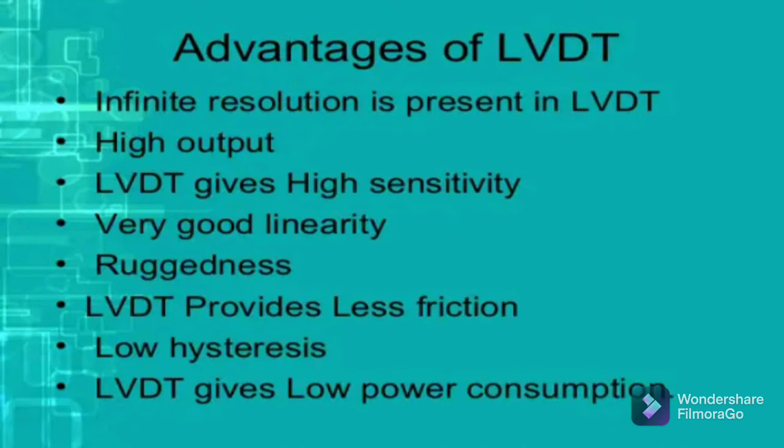This is especially useful when the core is located with a spring. The sixth advantage is low power consumption — LVDT consumes very low power, approximately one watt during operation. The seventh advantage is direct conversion to electrical signal — they convert linear displacement directly to the corresponding electrical voltage signal, which is easy to process further. The last advantage is fast dynamic response — due to the absence of friction, its dynamic response becomes very fast to changes in core position.